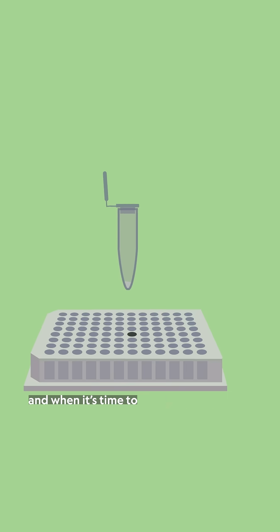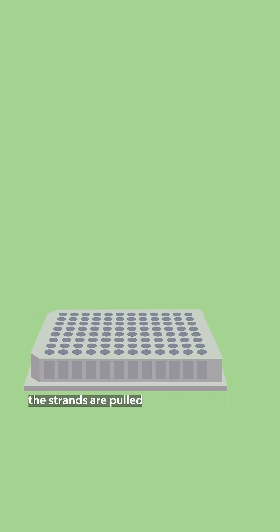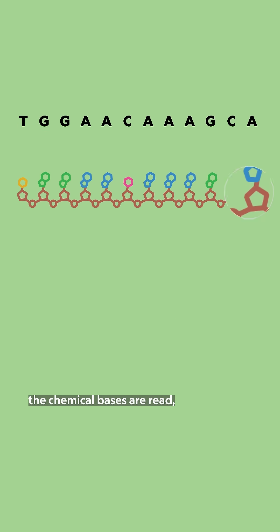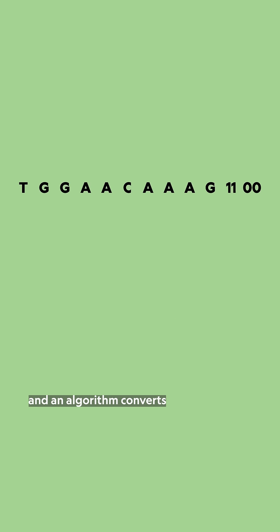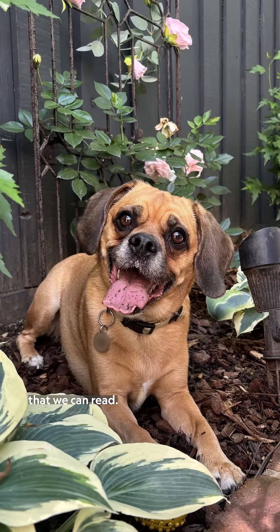And when it's time to retrieve digital data from DNA, the strands are pulled from the archive. The chemical bases are read, and an algorithm converts the archived information back to ones and zeros, and then back into pixels and letters that we can read.